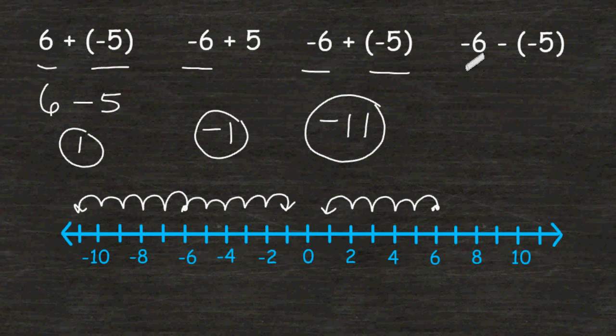And the last example reads negative 6 minus negative 5. So if we were to compare this example to the third example, the only difference here is that we change this addition sign to a subtraction sign. Now, when you have an addition sign, it really means you do the same thing as what you see after that sign. So in example number 3, we had to do the same thing as moving backwards a distance of 5.